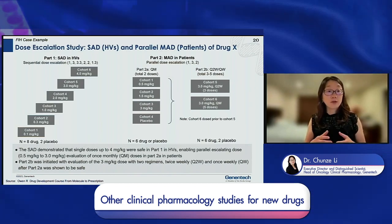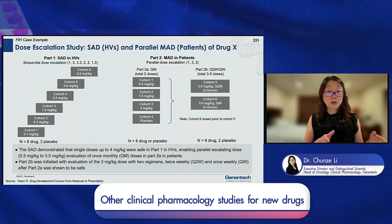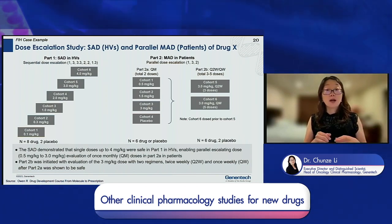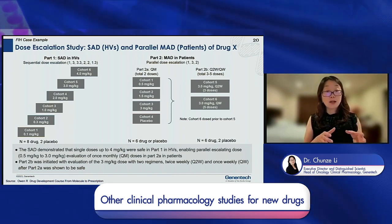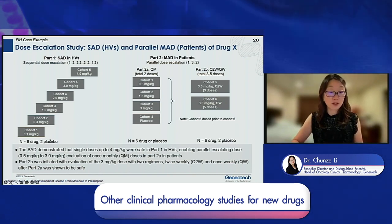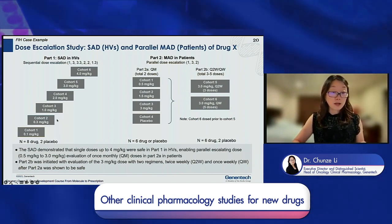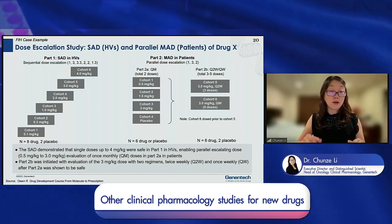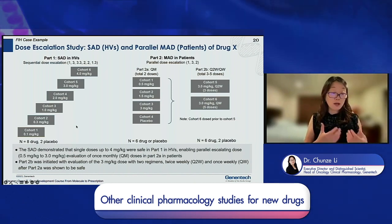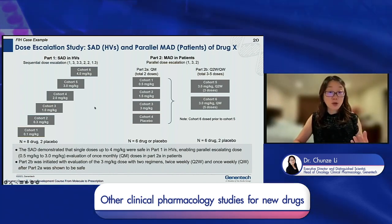Here's an example of a classical dose escalation study for Drug S, a large-molecule monoclonal antibody. We first conduct a SAD in healthy volunteers. After showing the SAD is safe, we proceed to Part 2 — a MAD in patients. The SAD design has six dose cohorts with escalation factors of up to 3, 3, 2, 2, 1.3 — roughly one to threefold increases. Each dose level has eight patients on drug and two on placebo. Results confirmed that up to the highest dose, PK was safe in healthy volunteers.